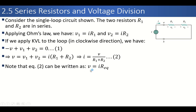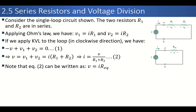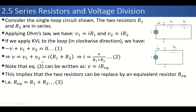Now we have the value of I, so we can easily find V1 and V2. We can rearrange the equation as V equals I times R_equivalent, where R_equivalent equals R1 plus R2. This means we can combine these two resistances and make one equivalent resistance R_equivalent whose value equals R1 + R2. So the two resistances can be replaced by a single equivalent resistor R_eq = R1 + R2.